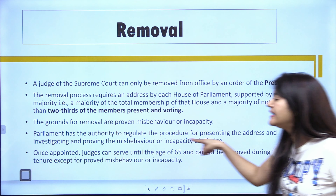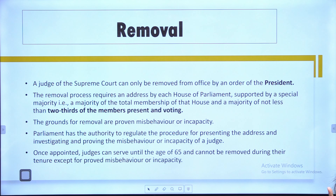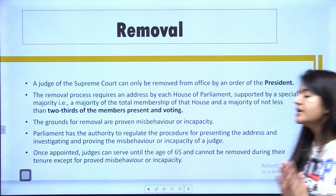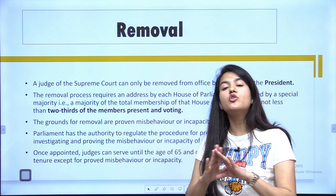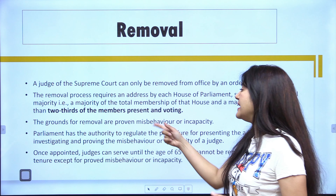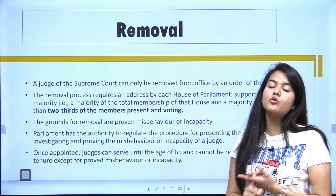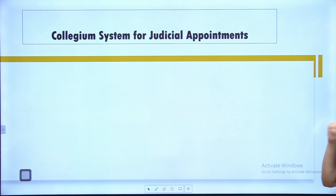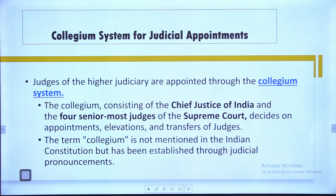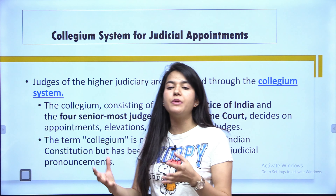So the first question from here: what is the sanctioned strength of the Supreme Court? That is 34 — 33 plus 1, where the plus 1 is for the Chief Justice of India. Originally, the Supreme Court had 8 judges — one Chief Justice and 7 other judges. Parliament has increased the number of judges over time, and now the sanctioned strength is 34, comprising 33 judges and the Chief Justice of India.